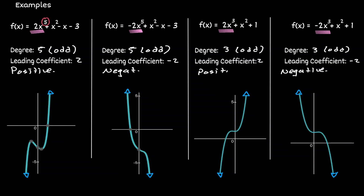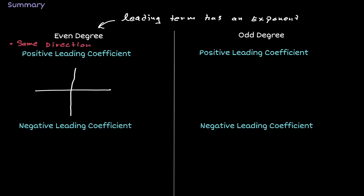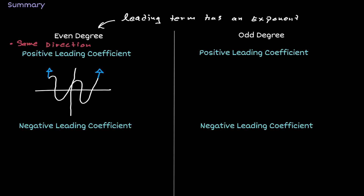Now let's summarize what we have said. For any polynomial, if the leading term has an exponent of an even degree, then the end behaviors will always face the same direction. If the leading coefficient is positive, going to the left we will be facing up and going to the right we will be facing up as well. Notice that we're not saying anything about what's going on between those behaviors — all we know is that as we move farther to the left we go up, and as we move farther to the right we go up as well. We're just stating something about the end behaviors.